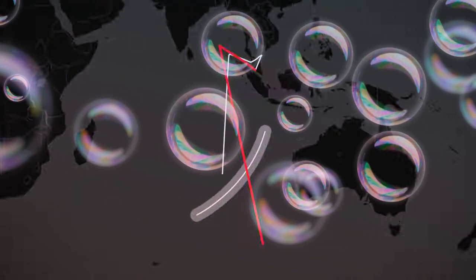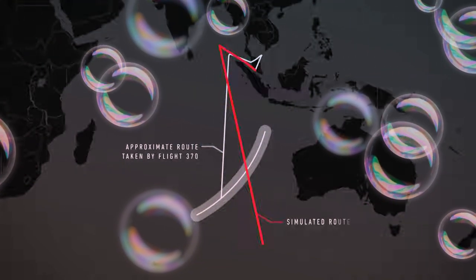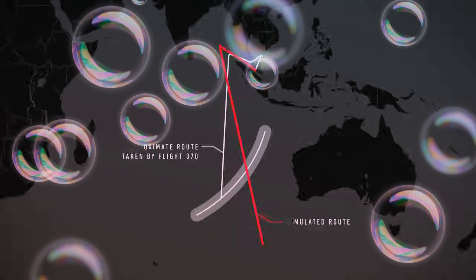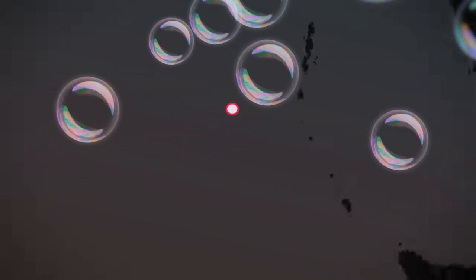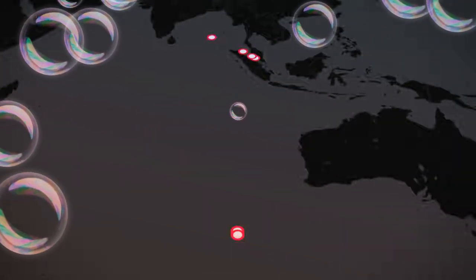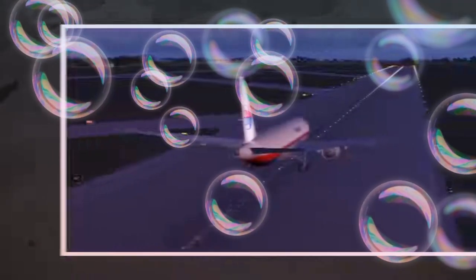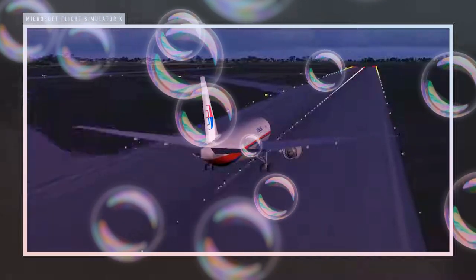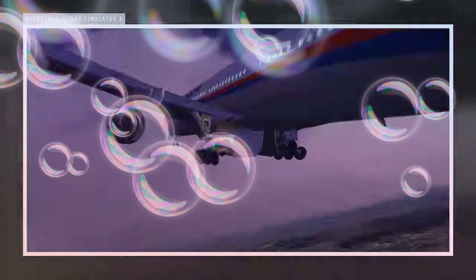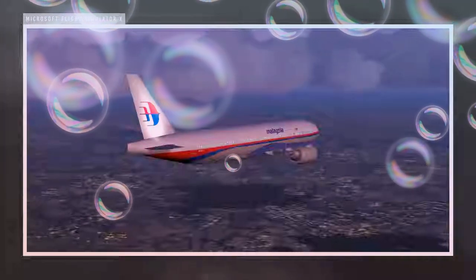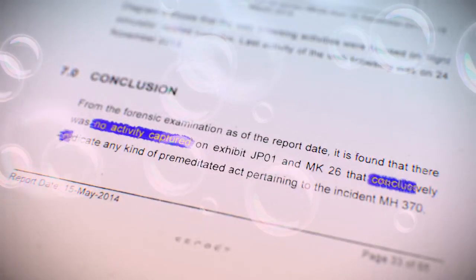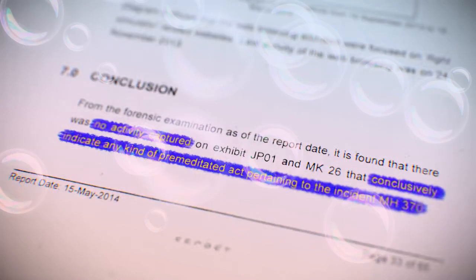It should come as no surprise that many regard this as damning evidence of premeditation. But according to investigators, it is not quite so evident. The data recovered consists of seven coordinates. Two in Kuala Lumpur. Two in the Strait of Malacca. One in the Bay of Bengal. And two in the Southern Indian Ocean. The data was reconstructed from a file that had been automatically generated and saved by the simulation software a month before the incident. However, it's not clear whether the coordinates originate from the same flight session. In other words, it might not be correct to simply trace a continuous line between these seven coordinates as they could be from separate sessions. The forensic examination by the Royal Malaysia Police simply concluded, no activity captured conclusively indicate any kind of premeditated act pertaining to the incident of MH370.